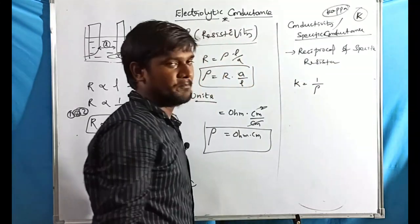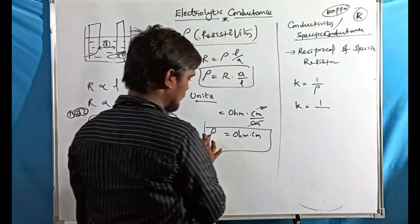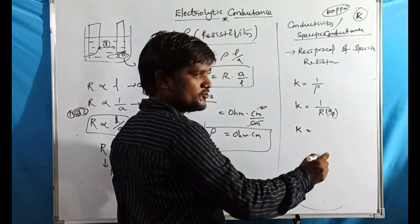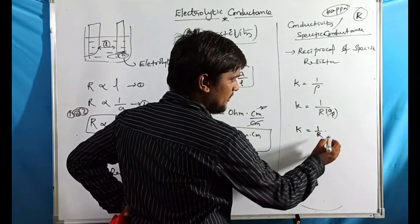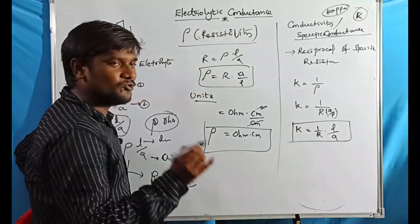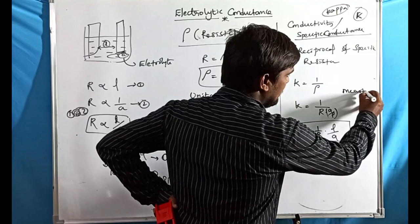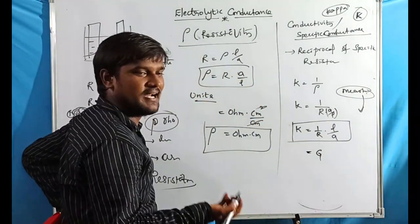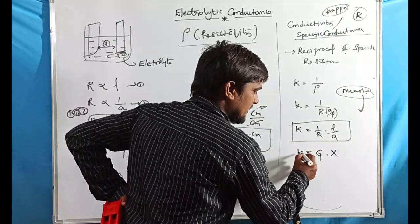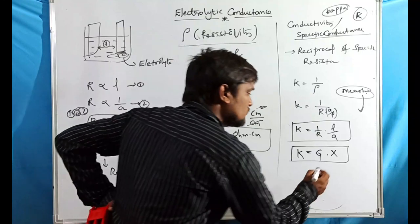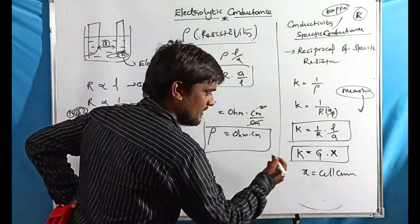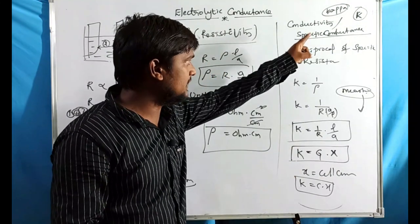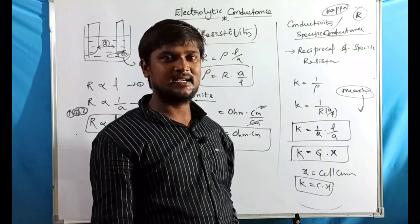We know ρ = R × A/L, so κ = 1/ρ = (1/R) × (L/A). The term (1/R) is conductance G, and L/A is a new term denoted as X, called the cell constant. Therefore, κ = G × X, or equivalently κ = C × X, where κ is specific conductance (conductivity), C or G is conductance, and X is the cell constant (= L/A).